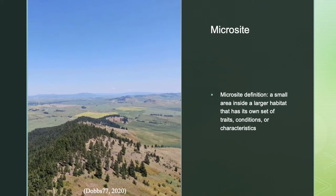The term microsite in ecology describes a small area inside a larger habitat that has its own sets of traits, conditions, or characteristics. Temperature, humidity, sunlight, nutrient availability, soil physical properties, vegetation cover, and other factors can all influence how microsites are classified. Kamiak Butte is a perfect example of this. When visiting the butte, it is instantly noticeable to see the different microsites on the north side and the south side. While the north side is overgrown with vegetation consisting of moss-lined trees, a multitude of shrubbery, and a blanketed pine forest ground, the south side consists of much more sparse vegetation such as ponderosa pine, grasses, and dried-out shrubs.